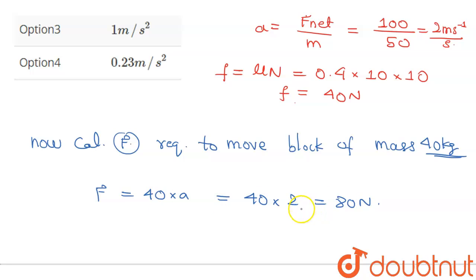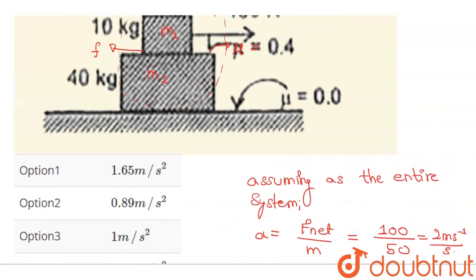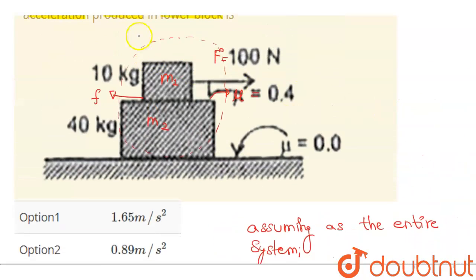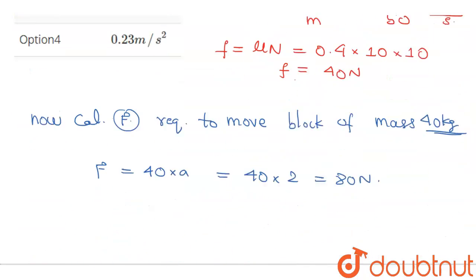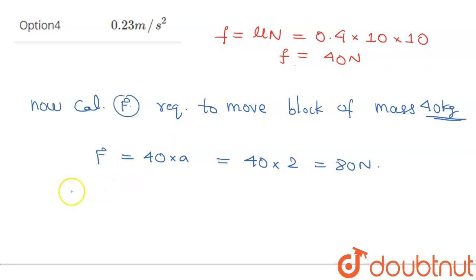This means that the assumption that we took, that both the blocks will move together, is wrong. Since we assumed the entire system, but we just found out that the required force is greater than the force that is available. This means that the assumption that both blocks will move together is wrong.